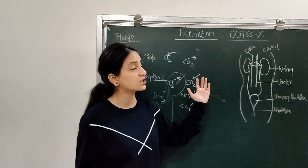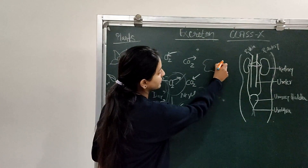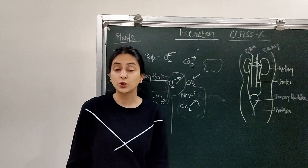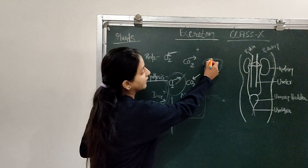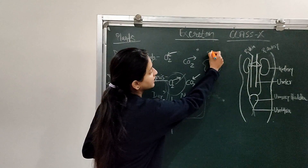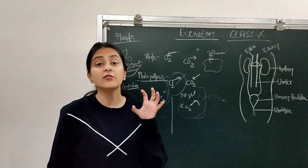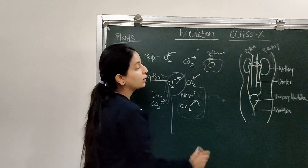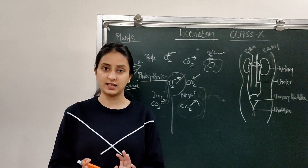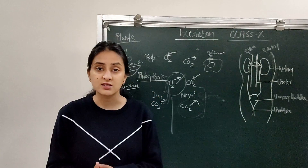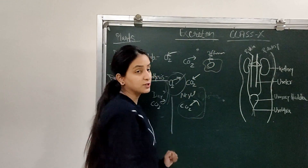Now let's talk about excretion in animals. First, let's talk about single-cell organisms — amoeba. Amoeba is a single-cell organism that releases its waste products through its cell membrane. Whatever waste product is in its body, it releases through its cell membrane by the process of diffusion. Amoeba also has a contractile vacuole, which is a cell organelle that helps release waste products. So in the case of amoeba, excretion is carried out by diffusion through the cell membrane or through the contractile vacuole.